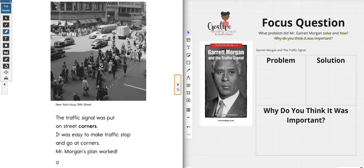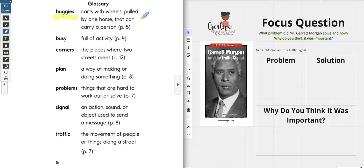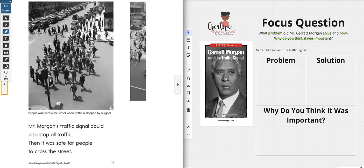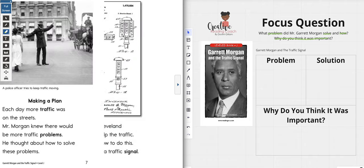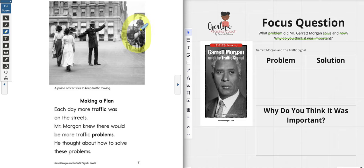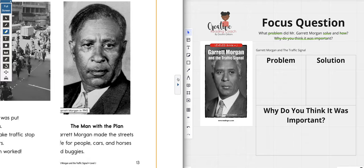A glossary lets us know exactly the words that we're going to be working with. For example, we have the word 'buggies,' which tells us those are carts with wheels pulled by one horse that can carry a person. Let's go back and see if we can spot a buggy — oh, there it is! It carries one person and it is pulled by a horse.